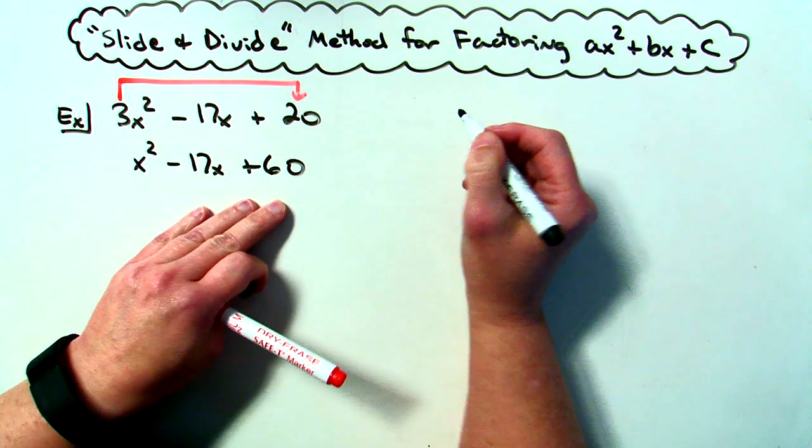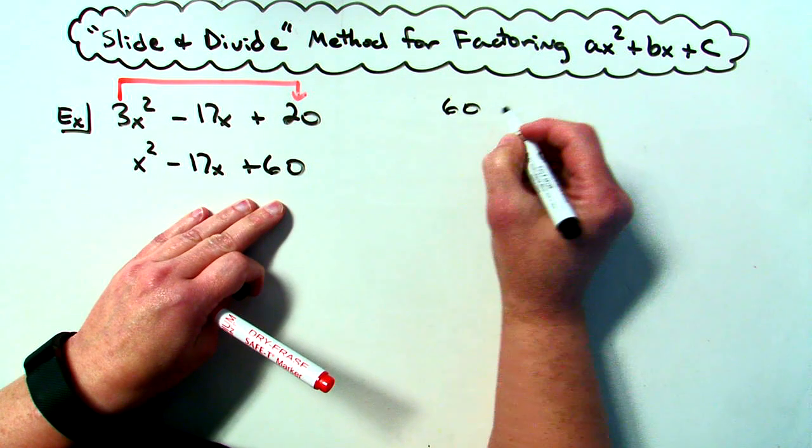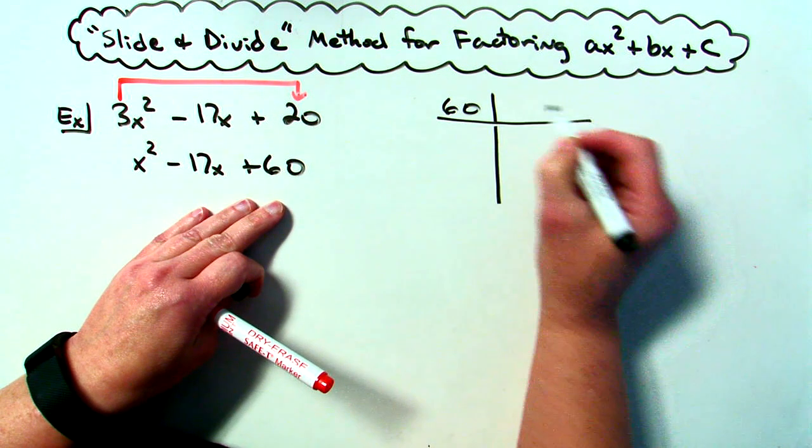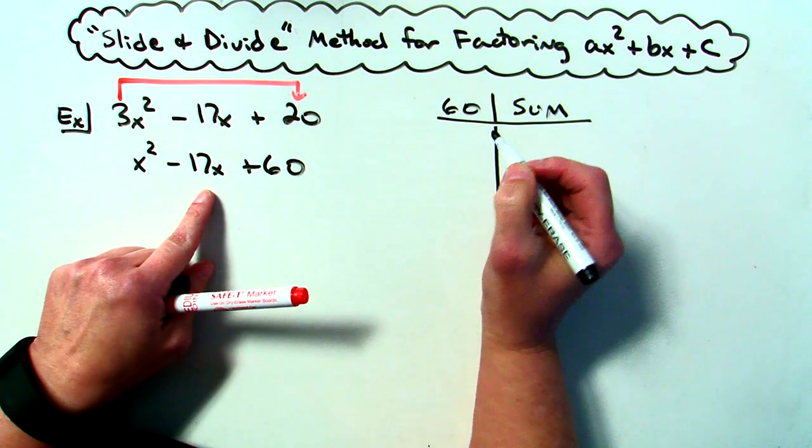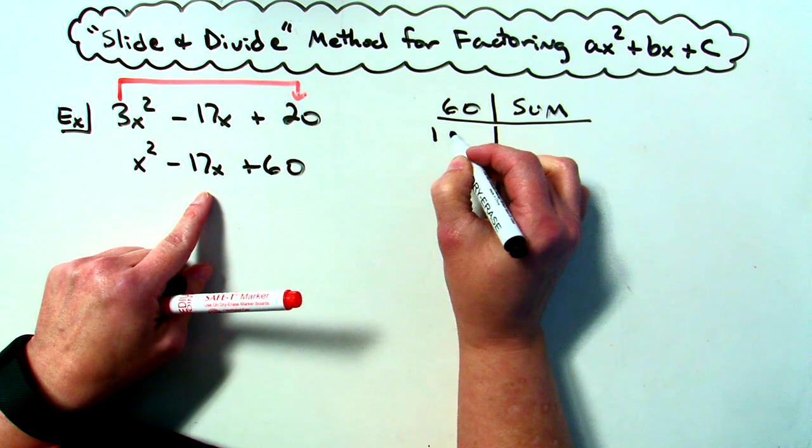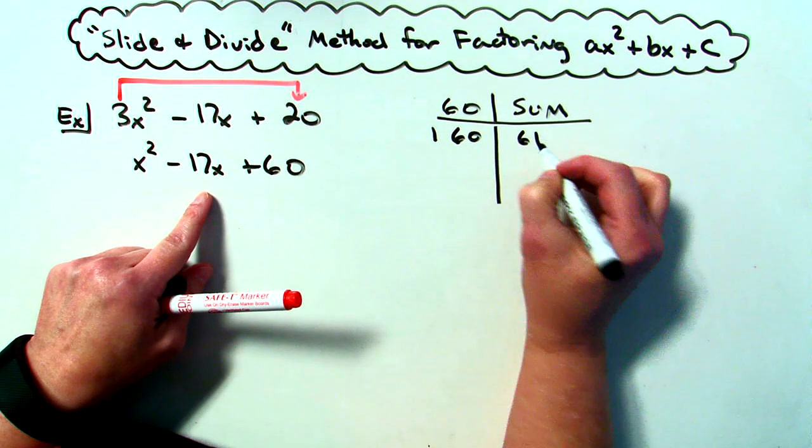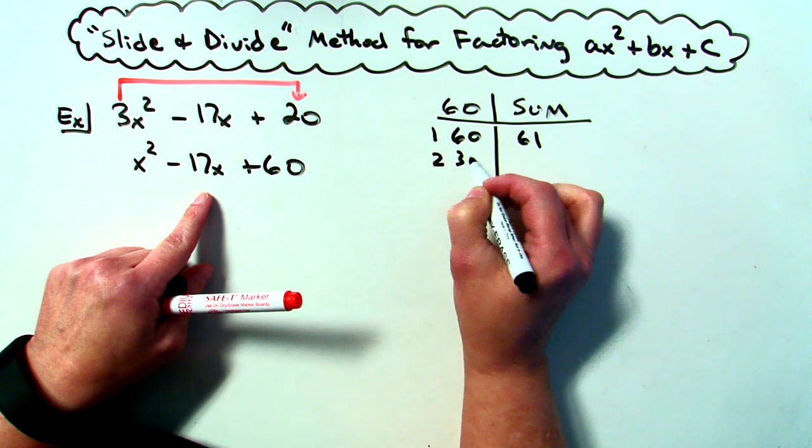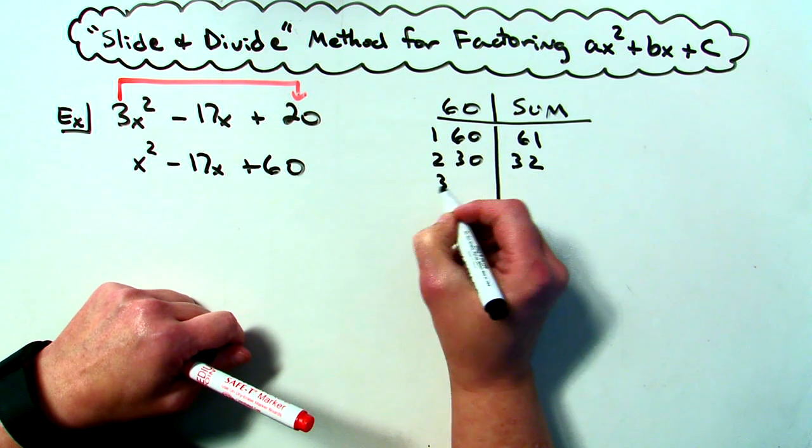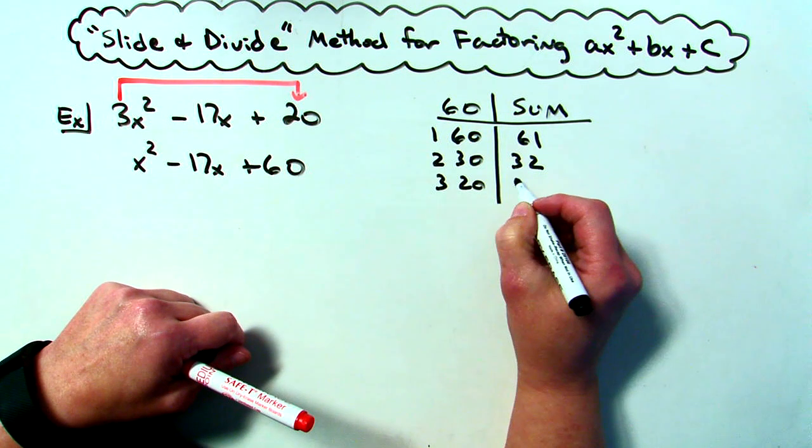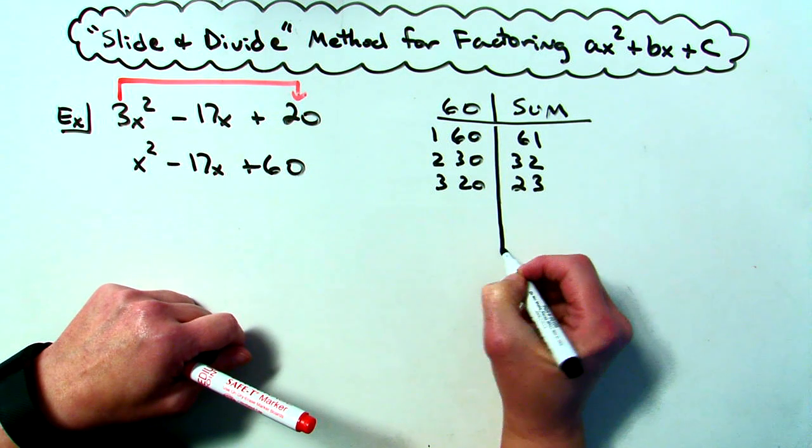So I need to factor this trinomial just like I always have. I need numbers that multiply to 60 and then have a sum of that middle term of negative 17. So I could do 1 times 60, 61 not going to work. 2 times 30 that would be 32 still getting pretty far away. 3 times 20 that'll be 23 still not finding it yet.